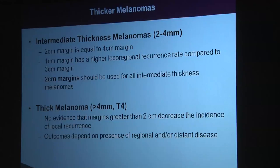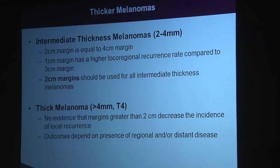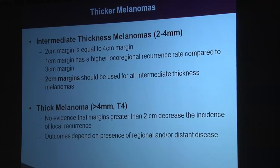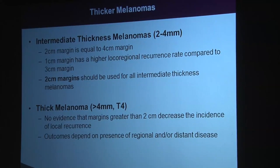For intermediate thickness melanomas — between 2 and 4 millimeters — a 2 centimeter margin is equal to a 4 centimeter margin, while a 1 centimeter margin had higher local recurrence rates. So for anything greater than 2 millimeters, you need a 2 centimeter margin, even if that means doing a flap. For thick melanomas greater than 4 millimeters in depth, it's not the local recurrence rate that's most likely to affect outcomes, so a 2 centimeter margin is also suggested.